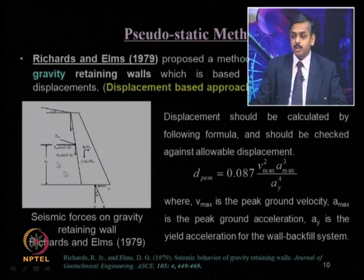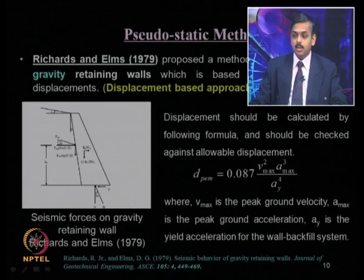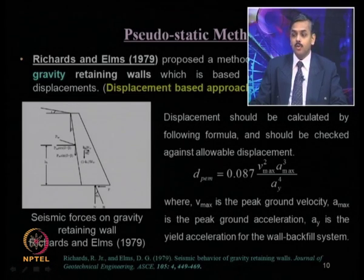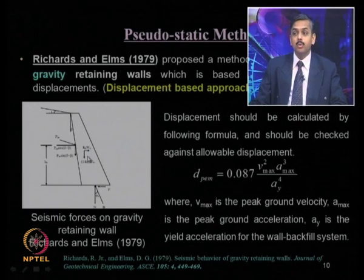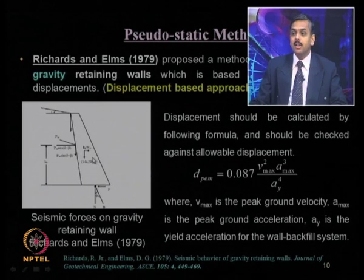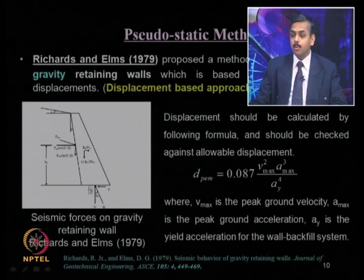The seismic active earth pressure and its point of action are considered. The wall is also subjected to seismic inertia forces K_H·W_W and K_V·W_W, which are the wall inertia forces including wall self-weight. For stability, this wall can either move in a sliding pattern — that is, translate — or rotate, or have a combination of these two. Richard and Elms proposed the sliding mode of movement.